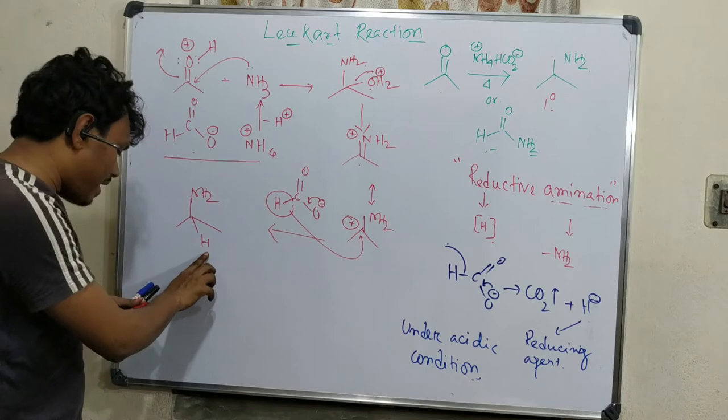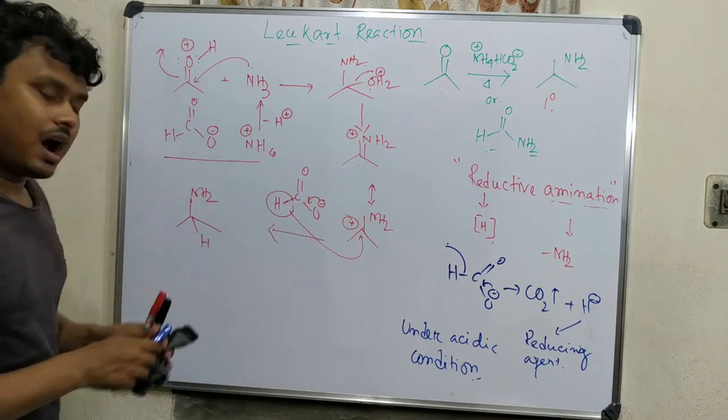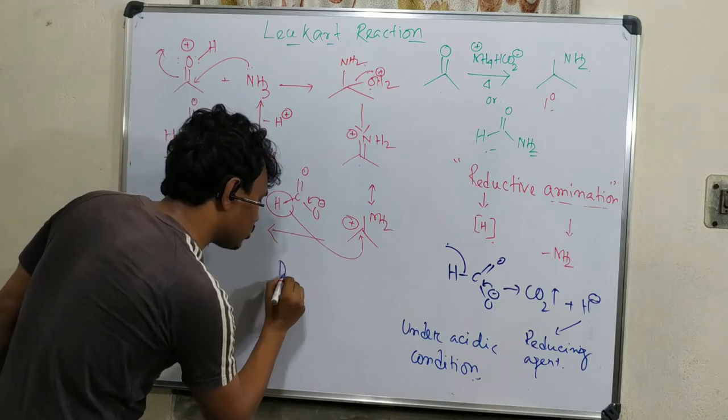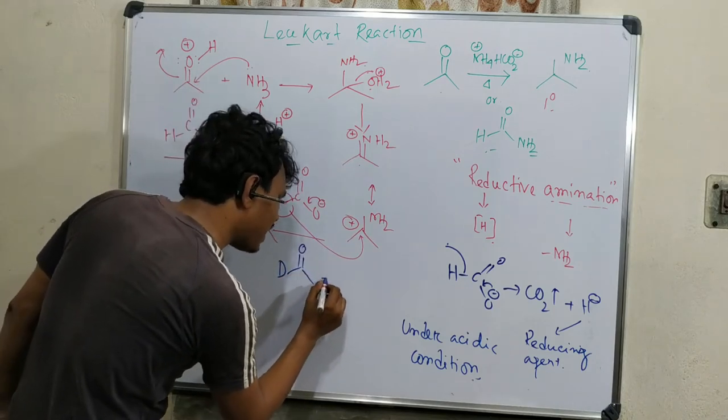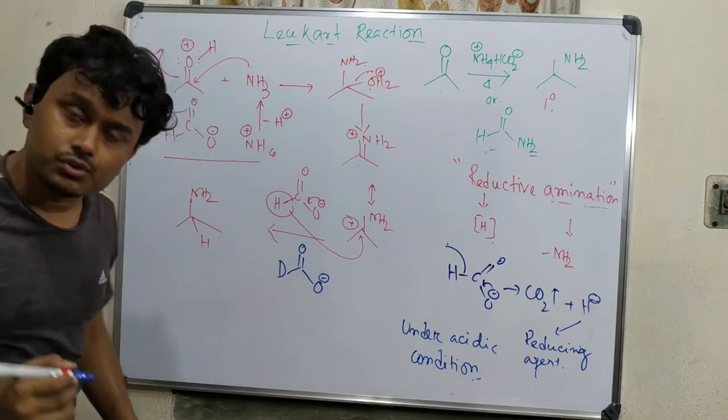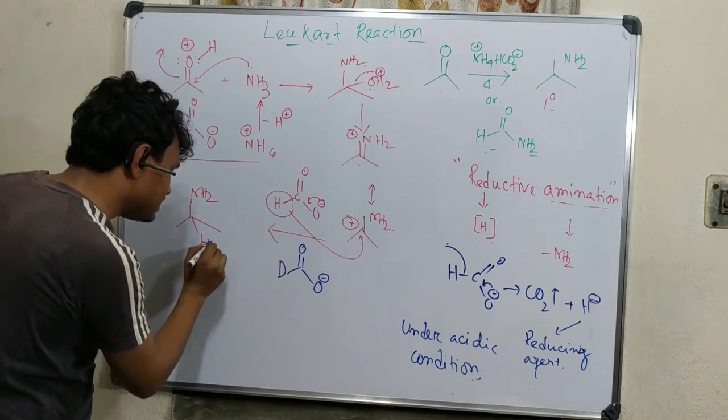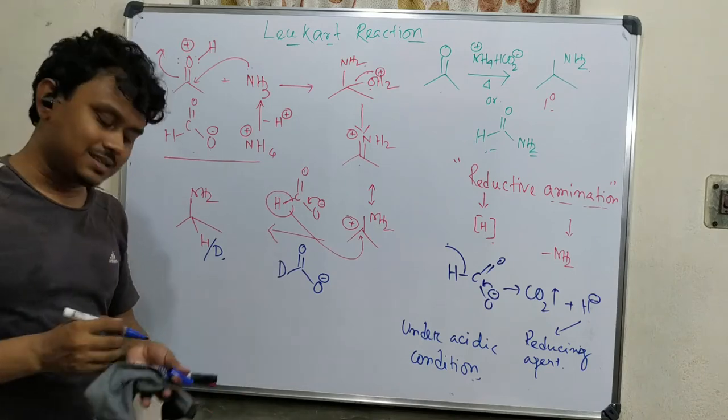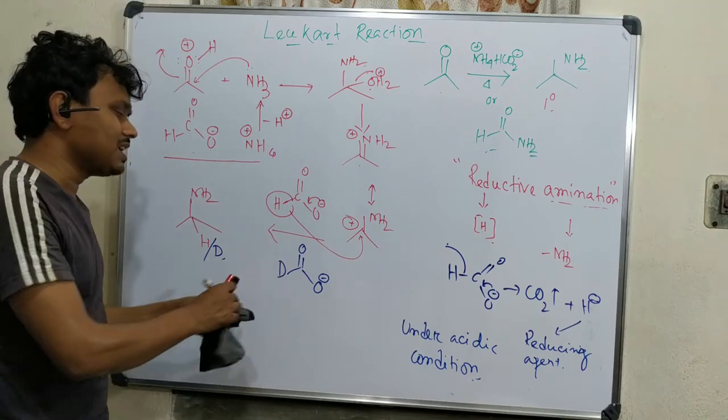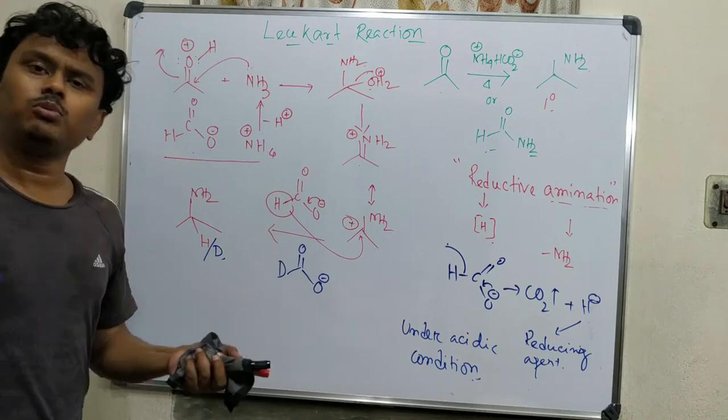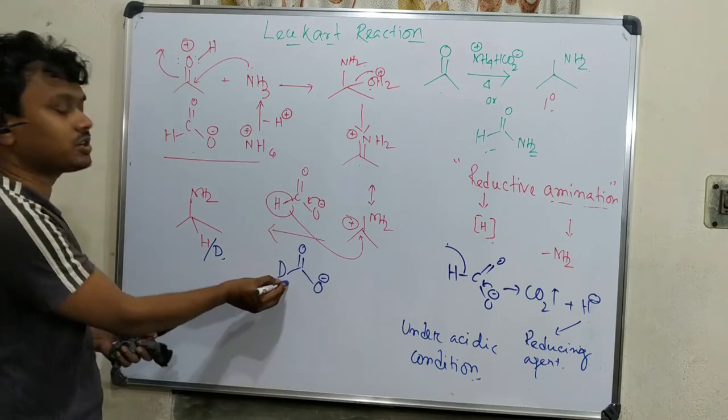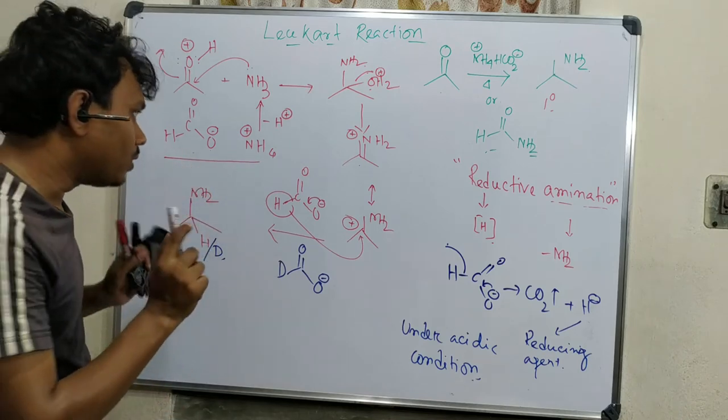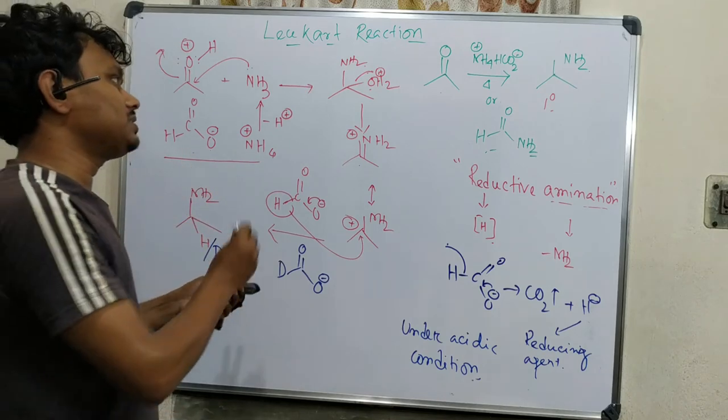How to prove this? Instead of formic acid, if we take deuterated formic acid, then here instead of hydrogen there will be a deuterium attachment. Keep this factor in mind - some questions may be given using this. It's a very small twist but you could be confused: where will this deuterium go? Which option should be this or this?